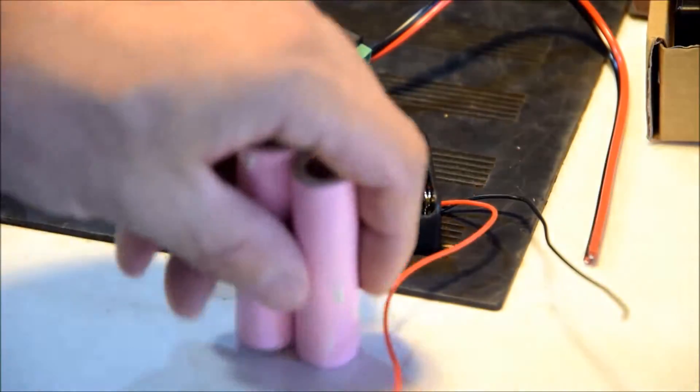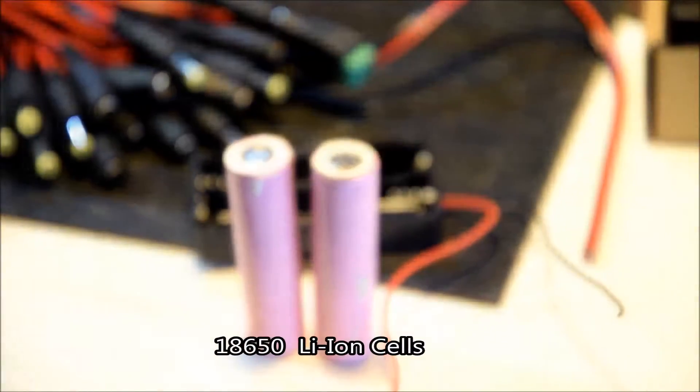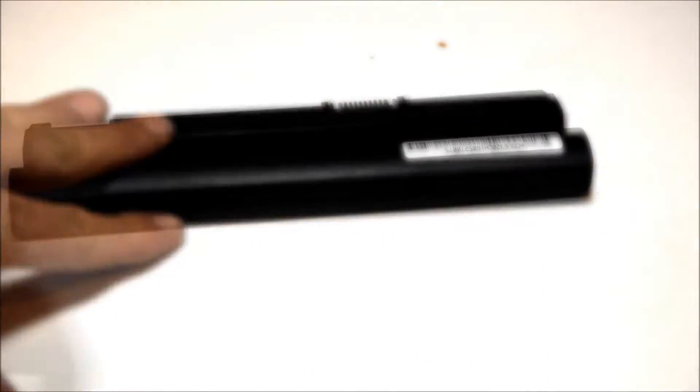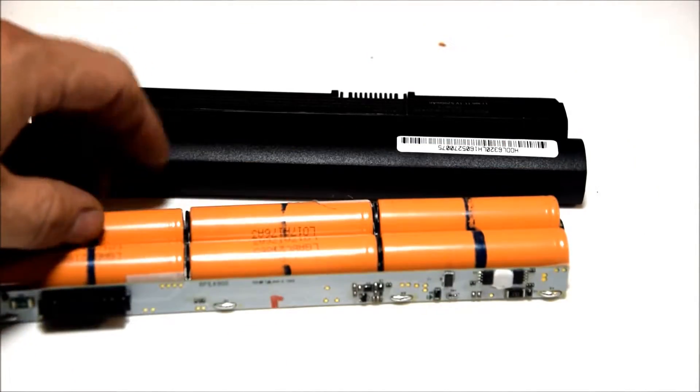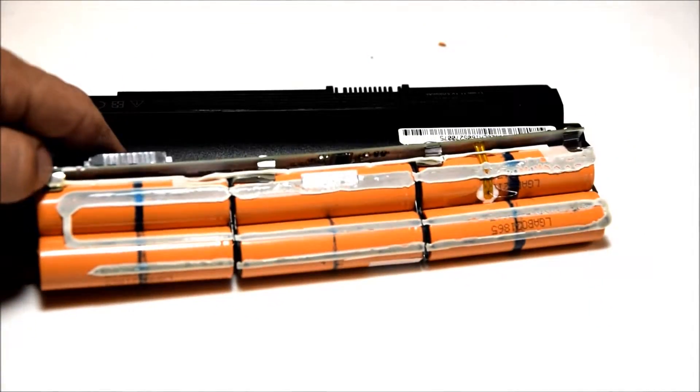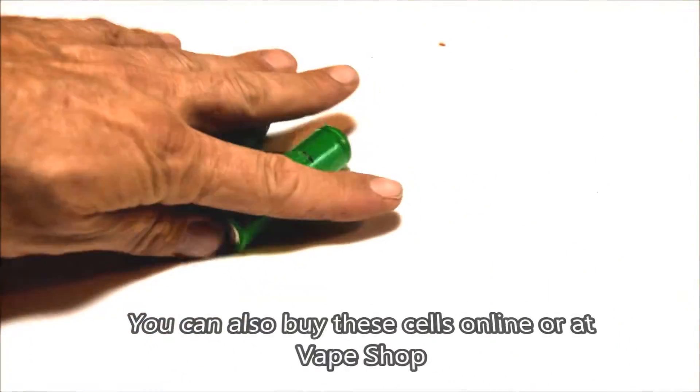Another part we'll need is the 18650 cells. Now I source these from used laptop batteries. Here's the plastic case. You open the case and here are the batteries. There are other videos online that will show you how to score some of these batteries.